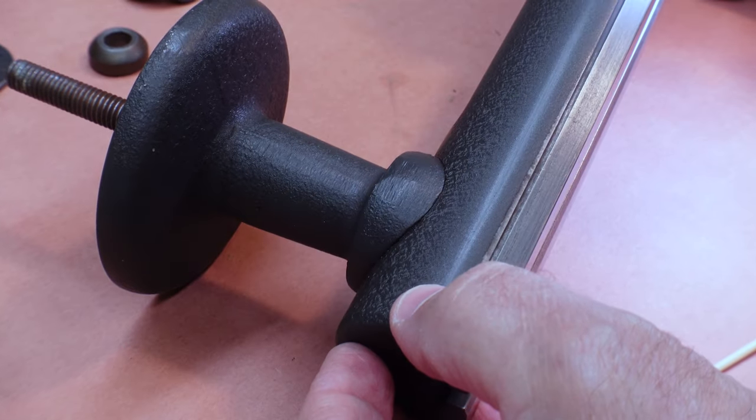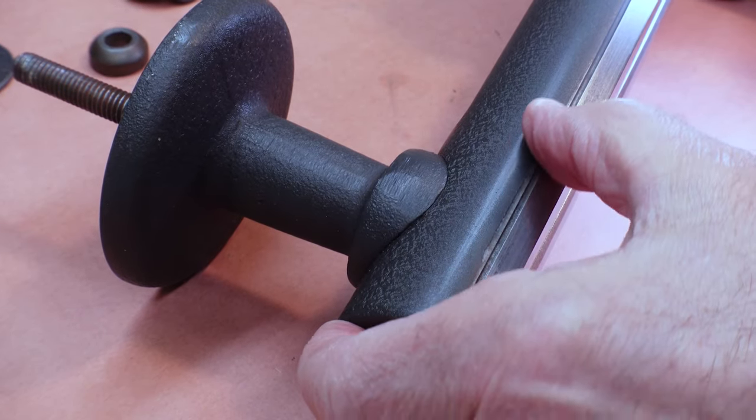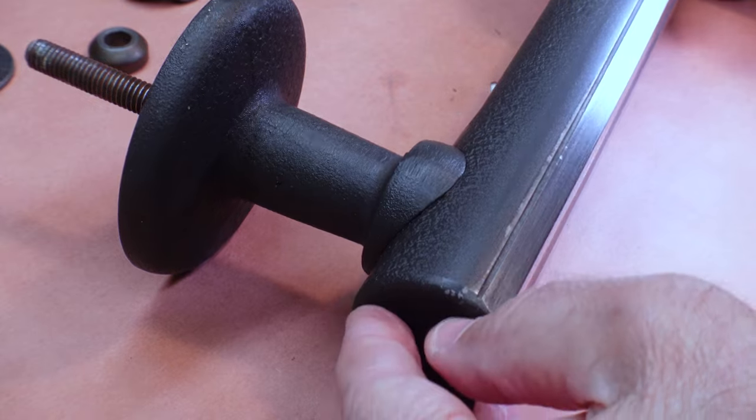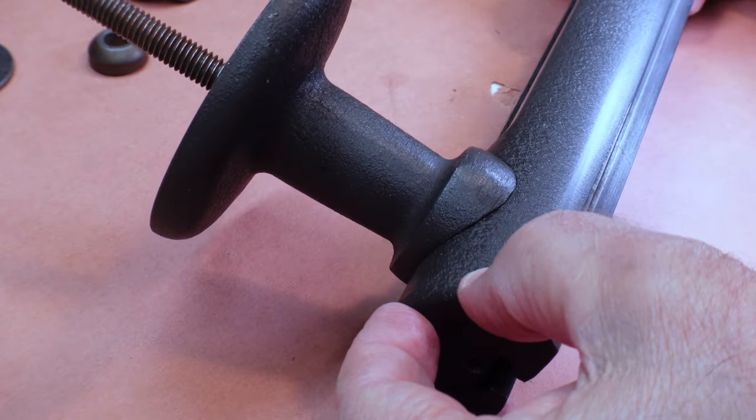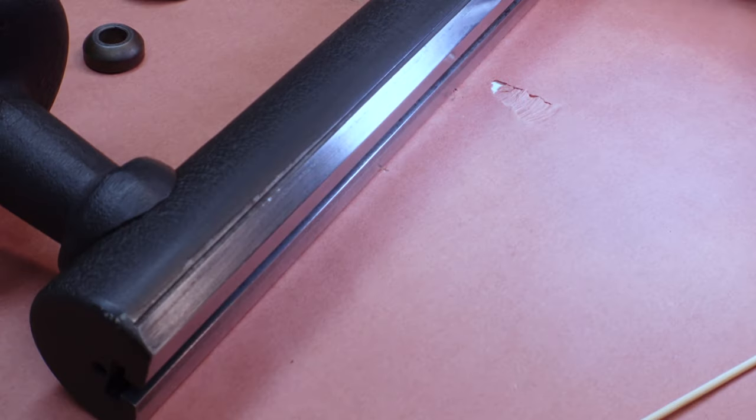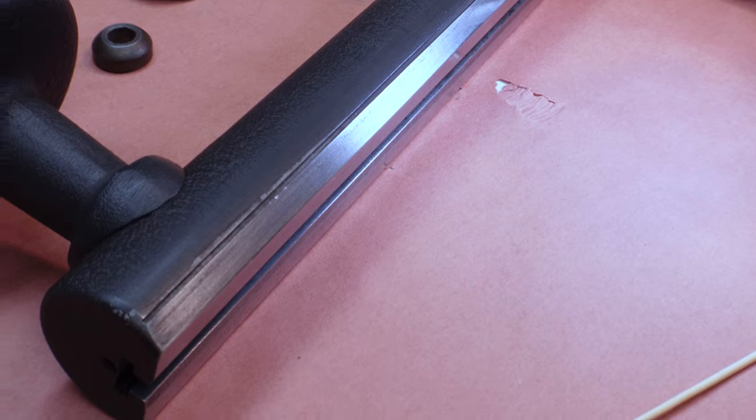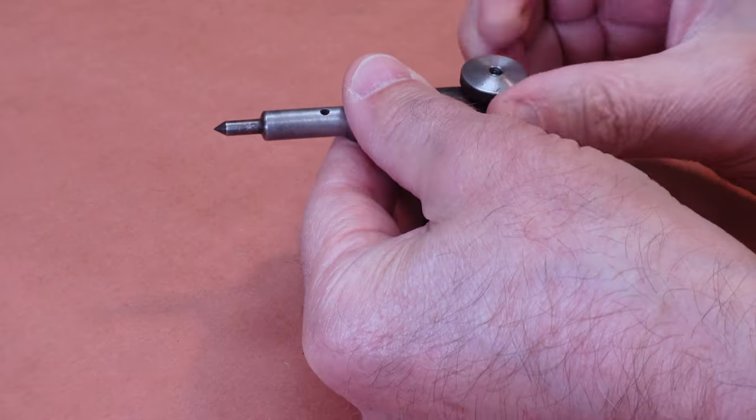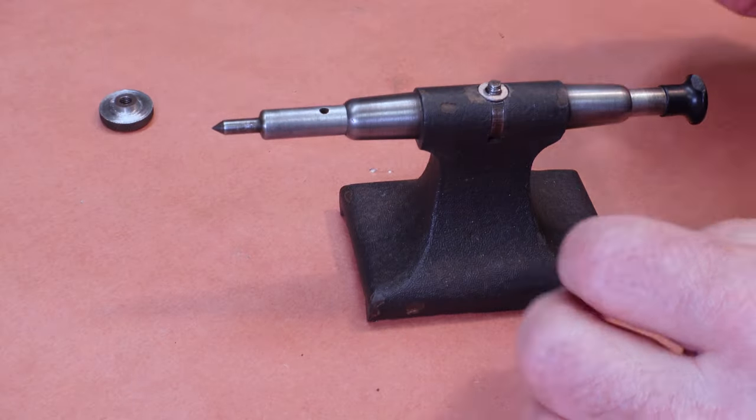Once I get all of the bare steel parts clean, I will be applying a few coats of automotive paste wax to protect against rust and help the parts slide smoothly against each other. I'm impressed by how simple the construction of this lathe is.